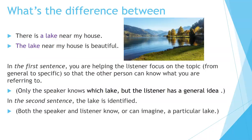What's the difference between there is a lake near my house and the lake near my house is beautiful? In the first sentence, you're helping the listener focus on the topic, from general lakes to a specific lake, so that the other person can know what you're referring to — only the speaker knows which lake, but the listener has a general idea. In the second sentence, the lake is identified — both the speaker and listener know or can imagine a particular lake.